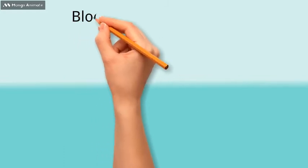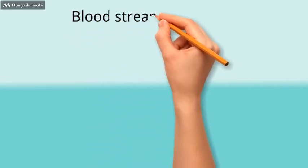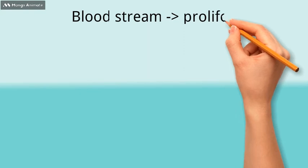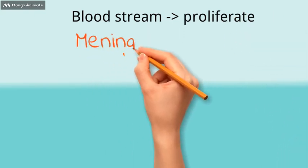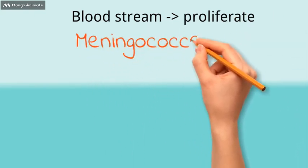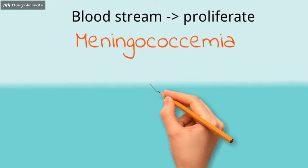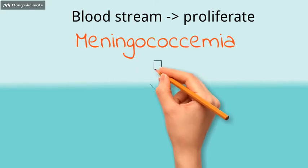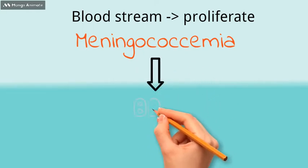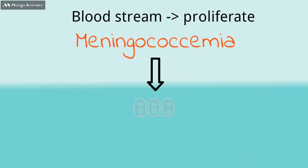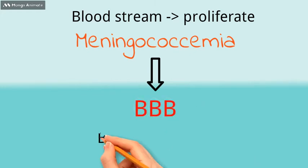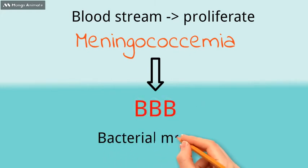Meningitidis can enter the bloodstream and it gets proliferated, resulting in meningococcemia. Also, meningitidis has the ability to cross the blood-brain barrier and inflame the meninges, giving rise to bacterial meningitis.